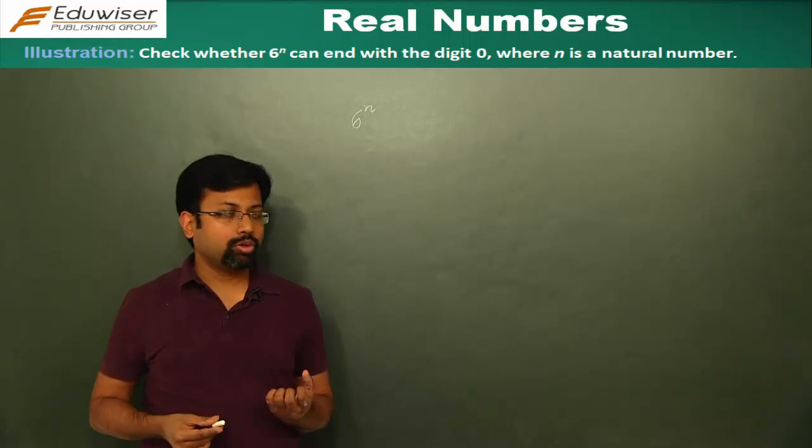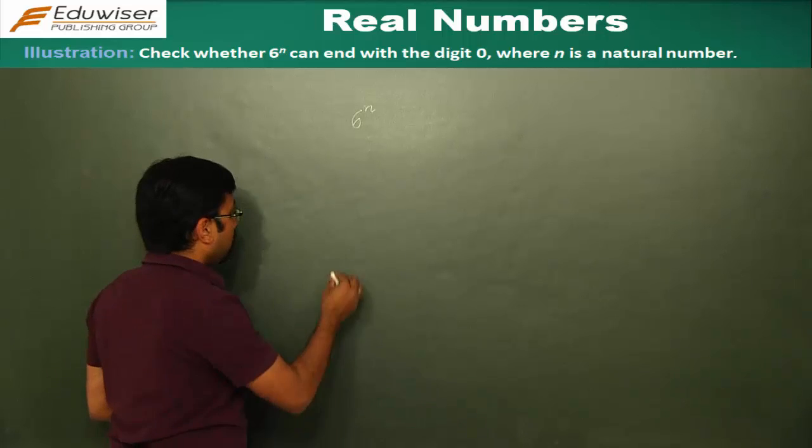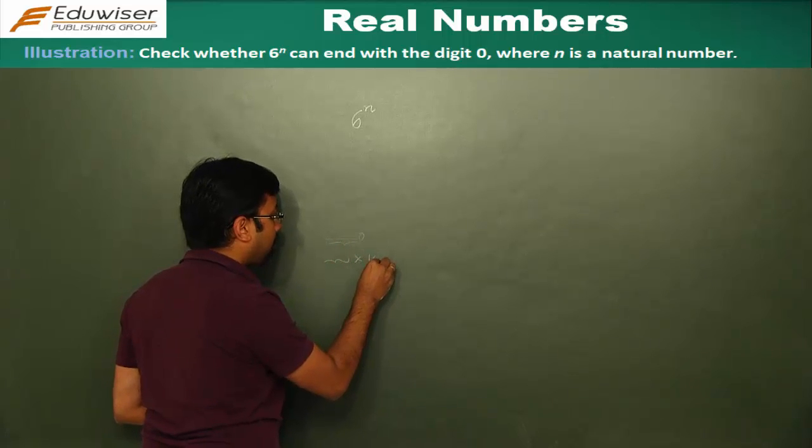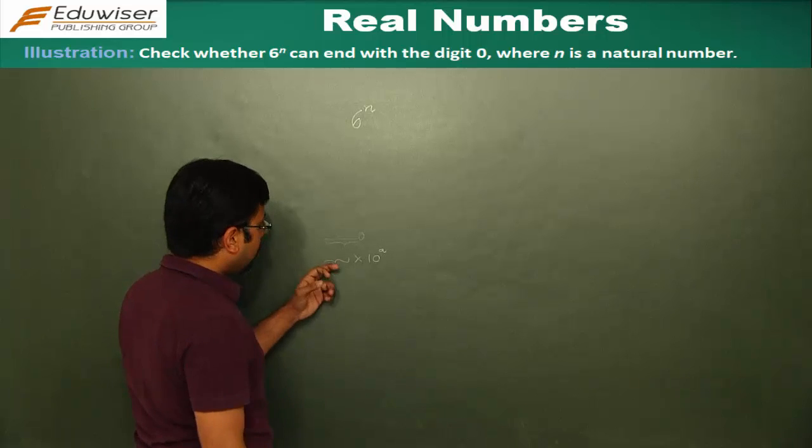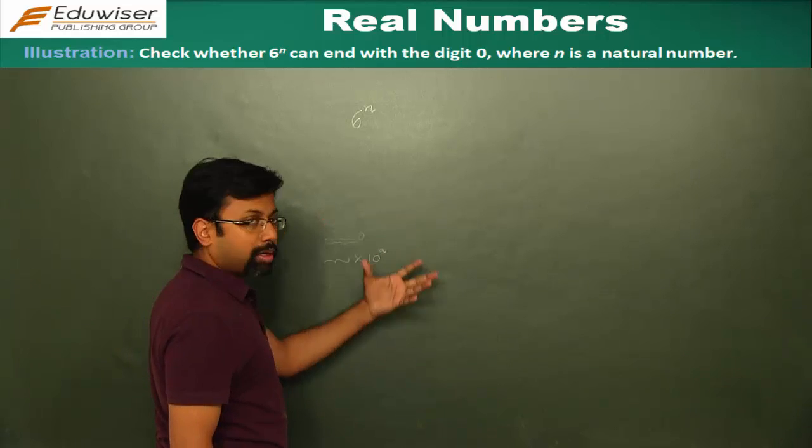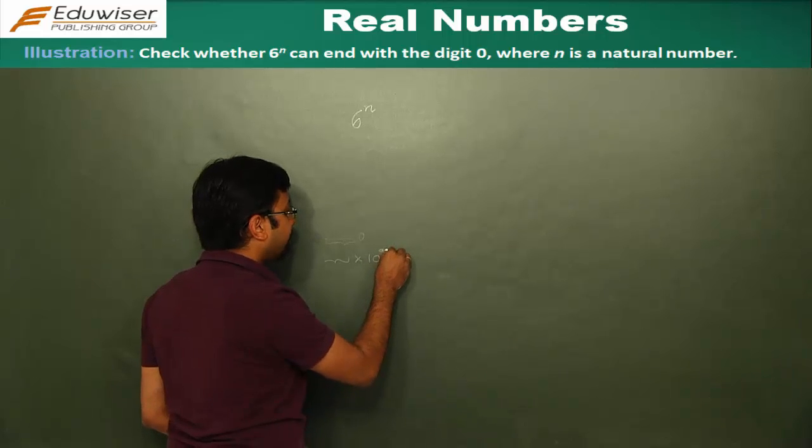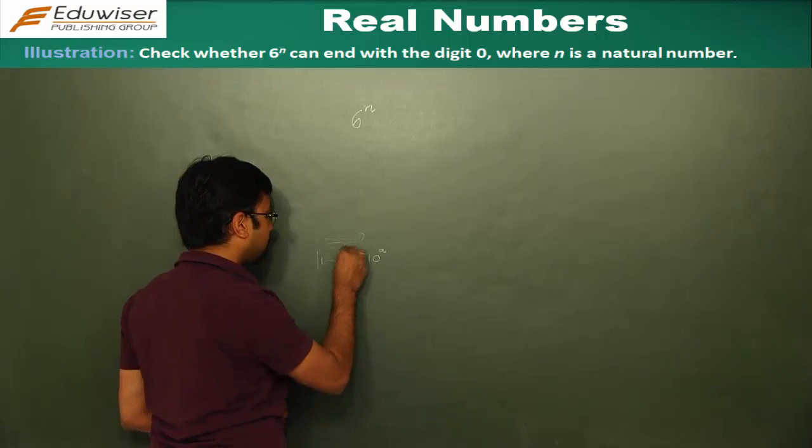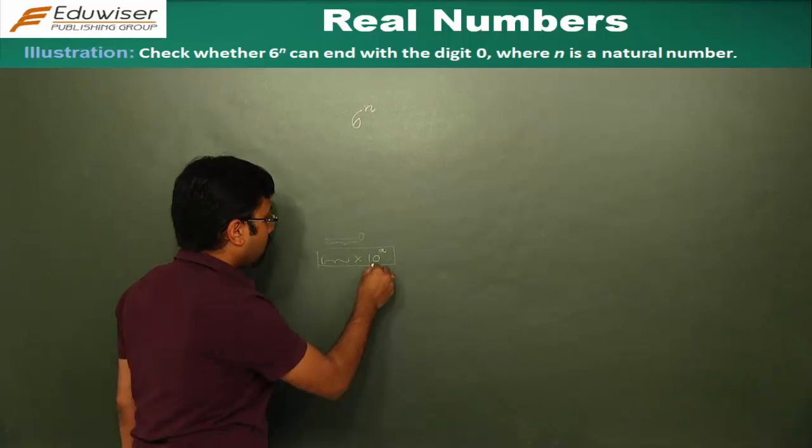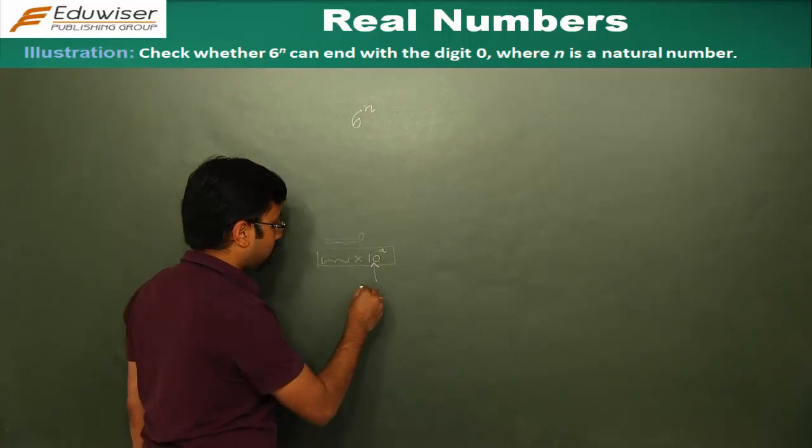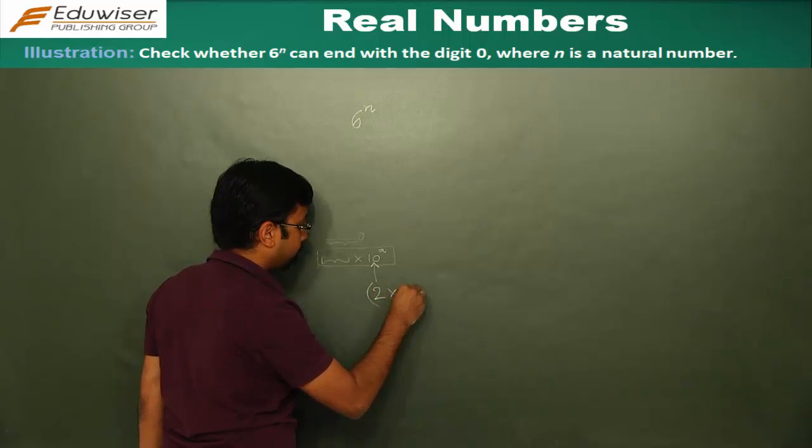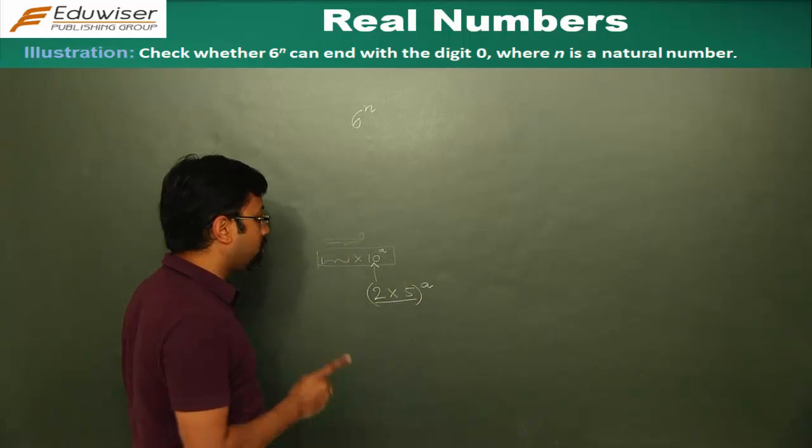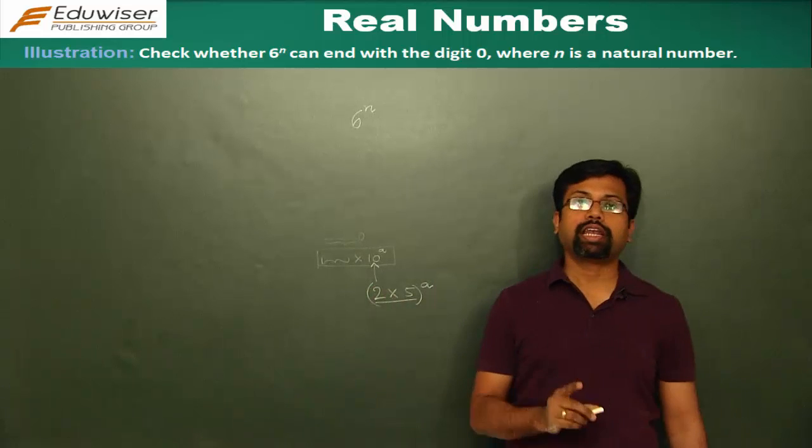Now for any number to end with 0, it has to have a special property. For any number to end with a 0 would mean it has to have some number multiplied by a power of 10. Any number multiplied by 10 to the power some number, where a is greater than 1. Only in that case you can say with certainty that the number is going to end in 0. Now this number 10 has two prime factors, 2 and 5. So unless and until you have at least 1, 2 and 1, 5, the number can never end in a 0.